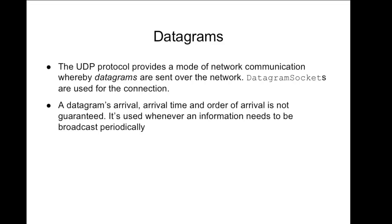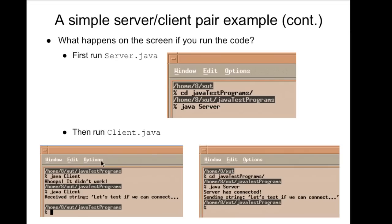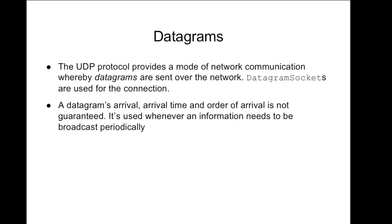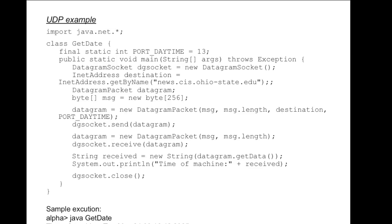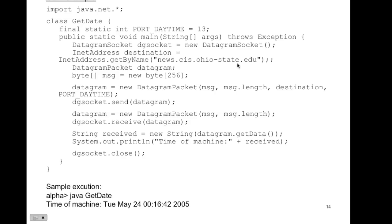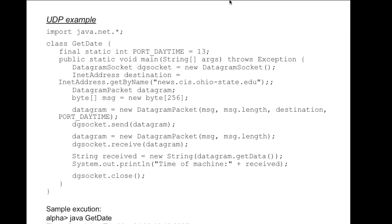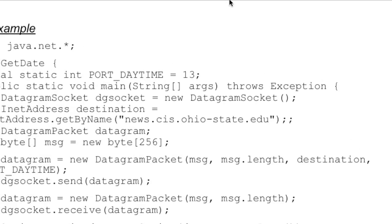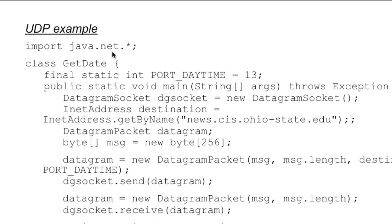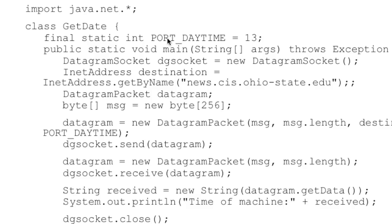UDP is used whenever information needs to be broadcast periodically — you can send datagrams out to all clients and servers. There's no synchronization. If the server's not up and the client sends a datagram, you won't get a connection error like with TCP — the datagram just goes out and may or may not arrive. In Java, it's the same package: java.net. Here we have a class GetDate with a DatagramSocket. We have a port constant called DATE_TIME as a final static integer, and an InetAddress pointing to the Ohio State news feed URL.